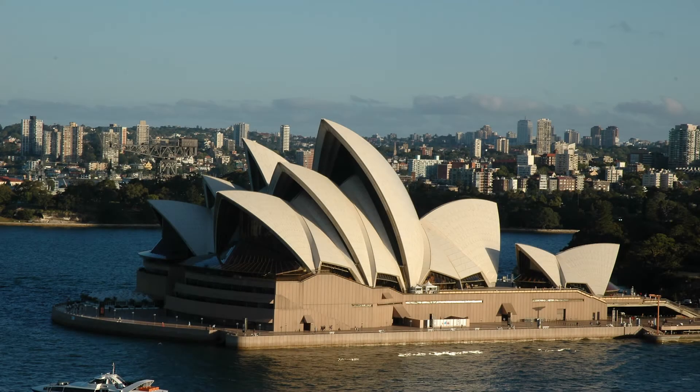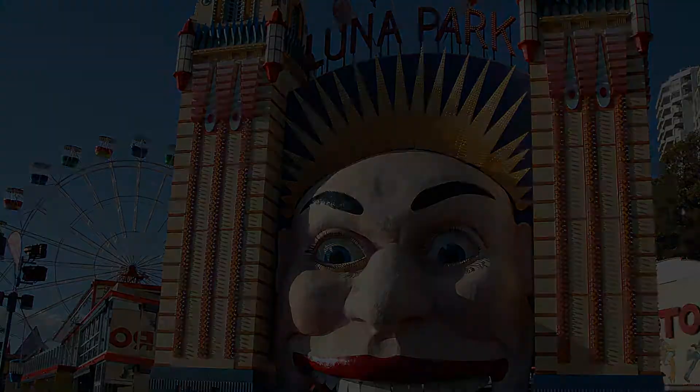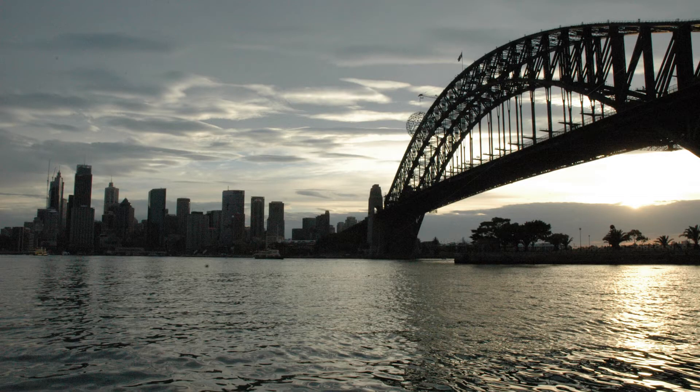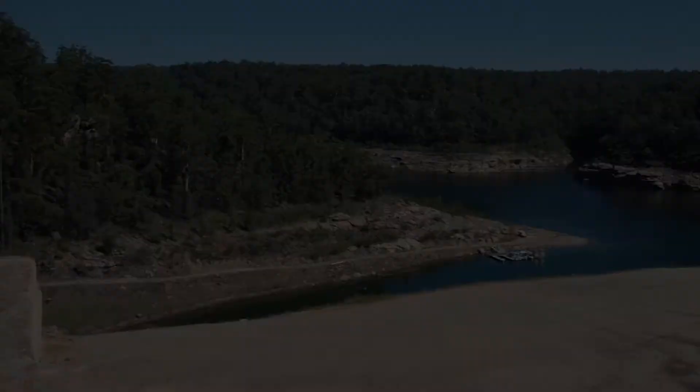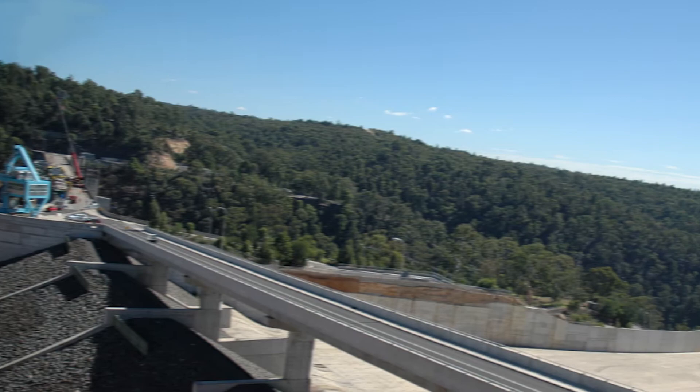Sydney has a problem. Australia's largest city is running out of water. And like most cities in Australia, it has only one major source of this precious resource. In Sydney's case, that's Warragamba Dam, which provides about 90% of the city's drinking water.